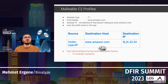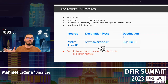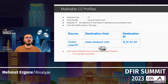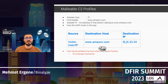The third technique is malleable C2 profiles. Attackers configure the beacon to modify the host header when it checks in, inserting a legitimate hostname like amazon.com or google.com. The only indicator is that the destination IP in the logs does not actually belong to that spoofed hostname. Again, you cannot simply block or whitelist based on the hostname without causing false positives.